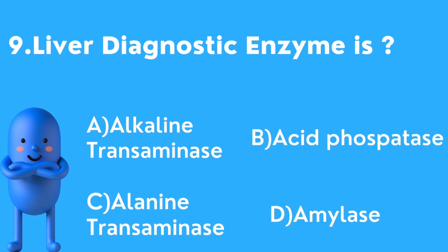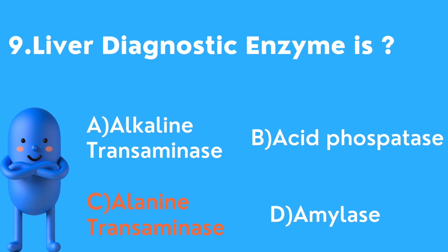Ninth question: Liver diagnostic enzyme. Alanine transaminase is used in liver function tests. Options include alkaline transaminase, acid phosphatase, alanine transaminase, and amylase. Alanine transaminase is present in liver cells; when the liver is damaged it is released into the blood, indicating a liver problem.